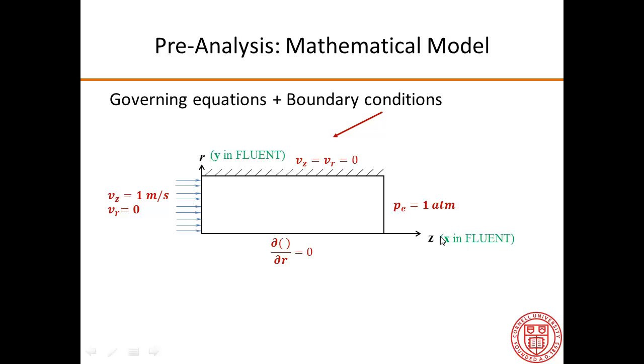Note that in Fluent, the axial direction is called x and the radial direction is called y. So wherever you see x, you have to mentally think of that as axial, and wherever you see y, you have to think of it as radial.